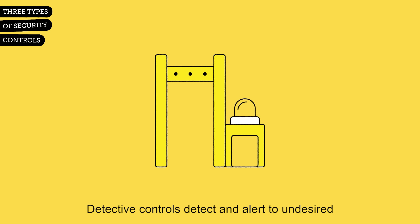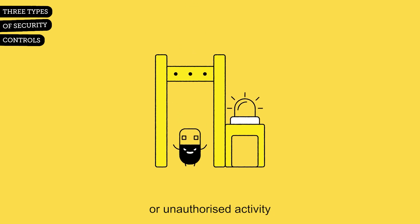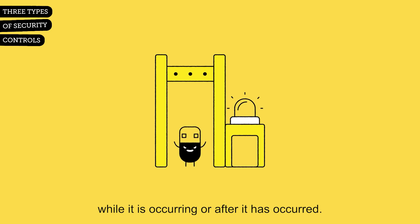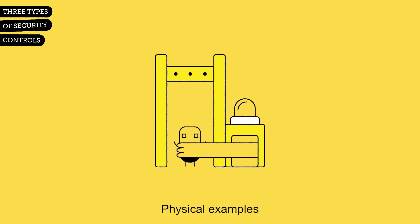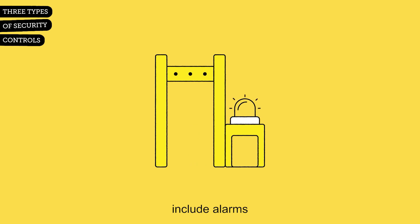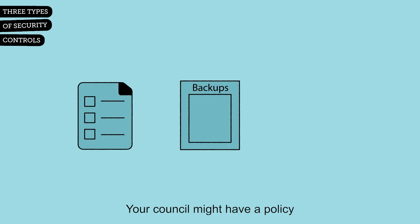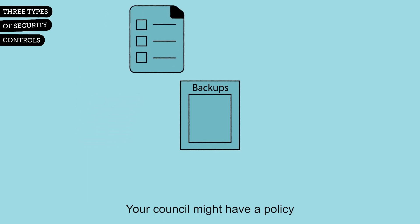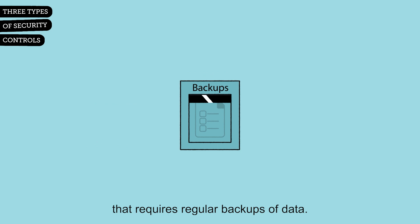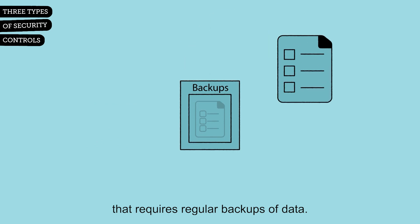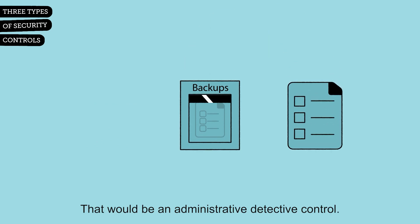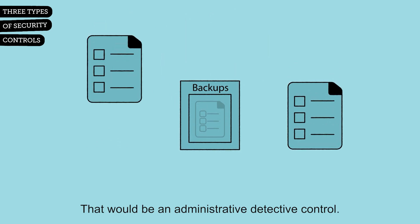Detective controls detect and alert to undesired or unauthorized activity while it is occurring or after it has occurred. Physical examples of detective controls include alarms that notify guards of potential problems. A council might also have a policy that requires regular backups of data — that would be an administrative detective control.